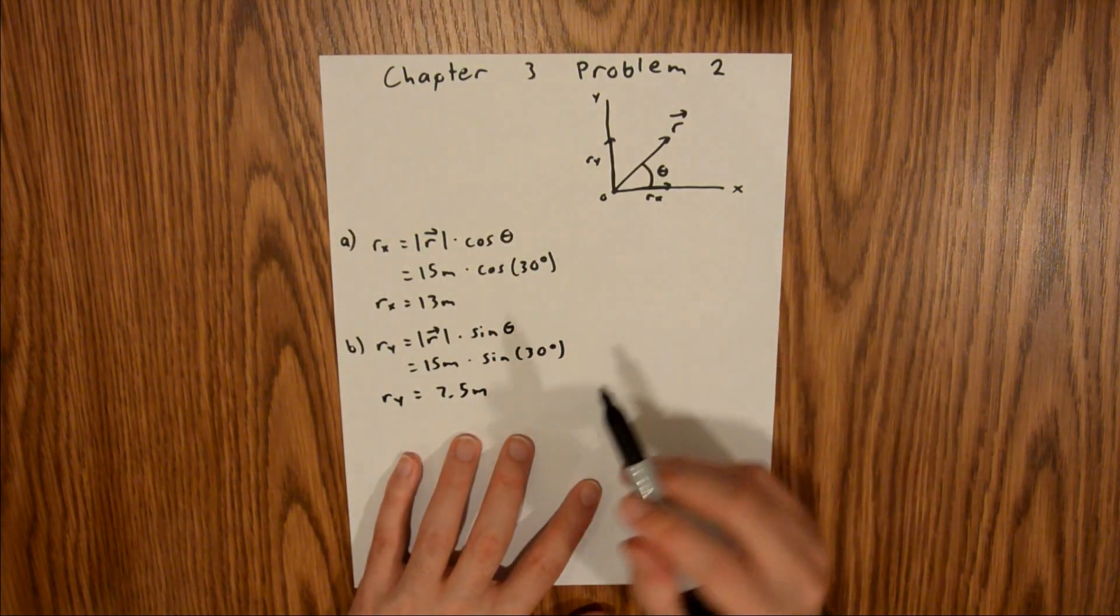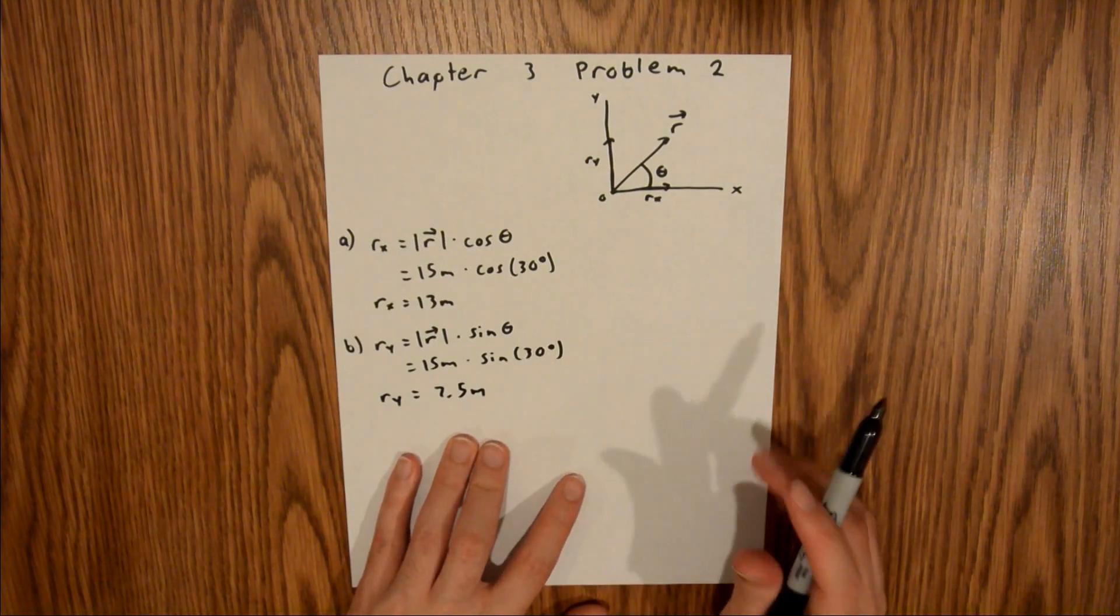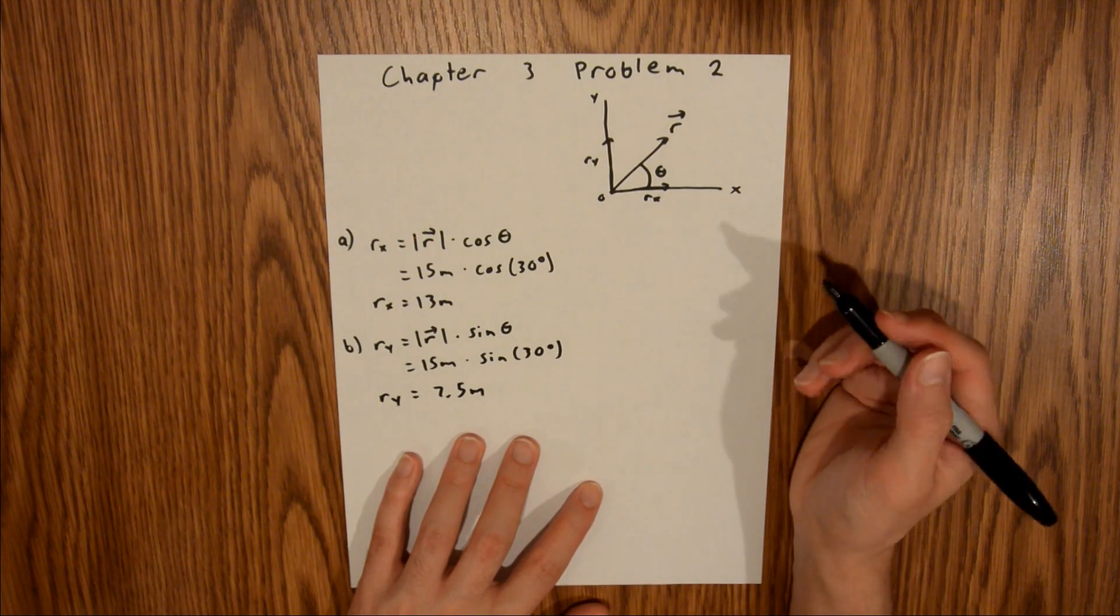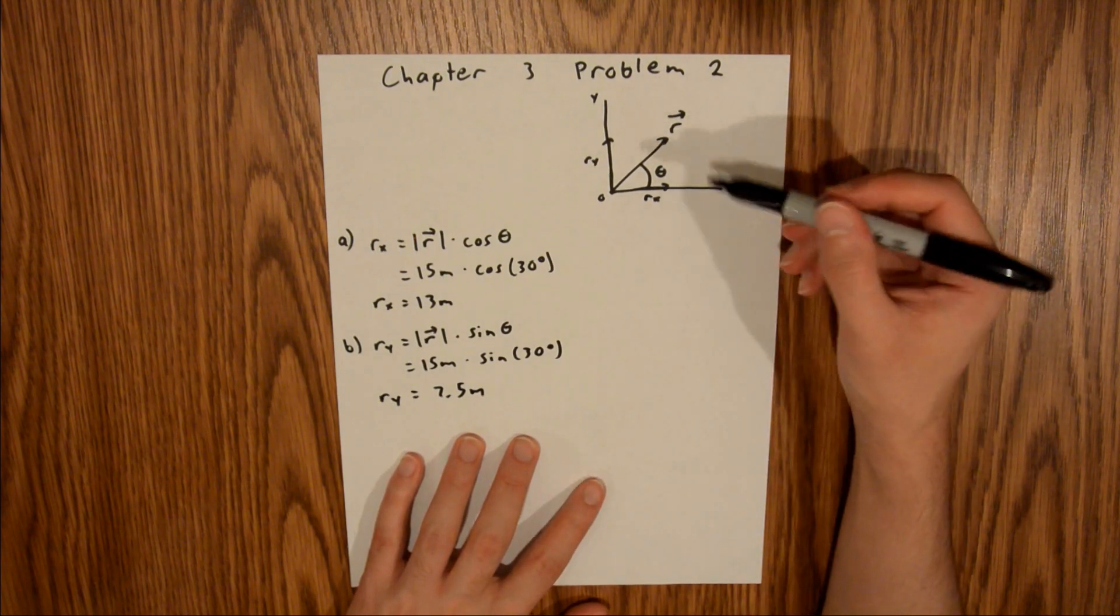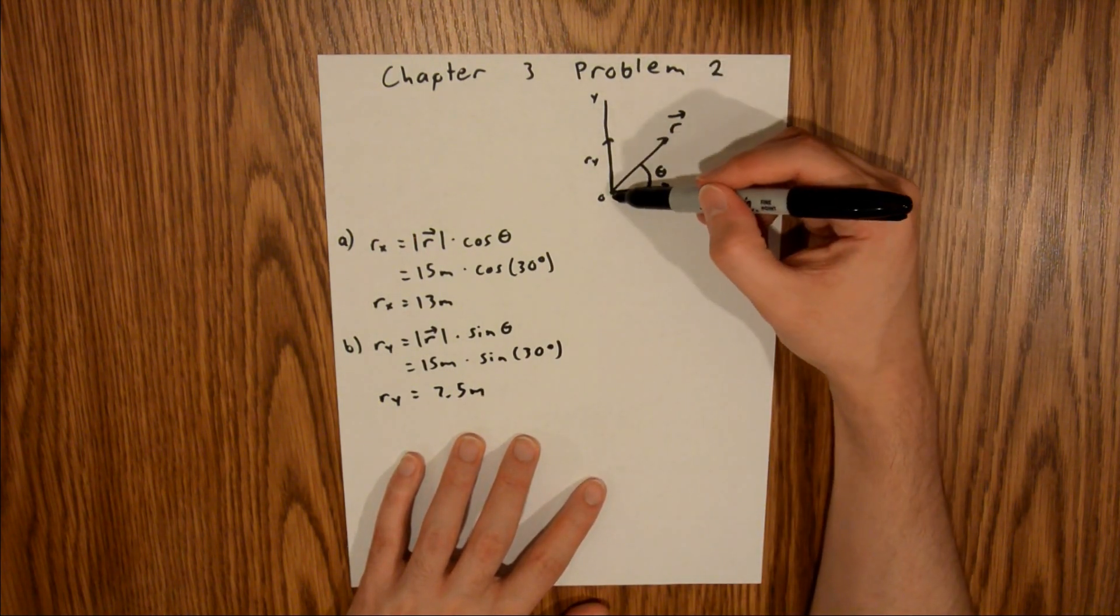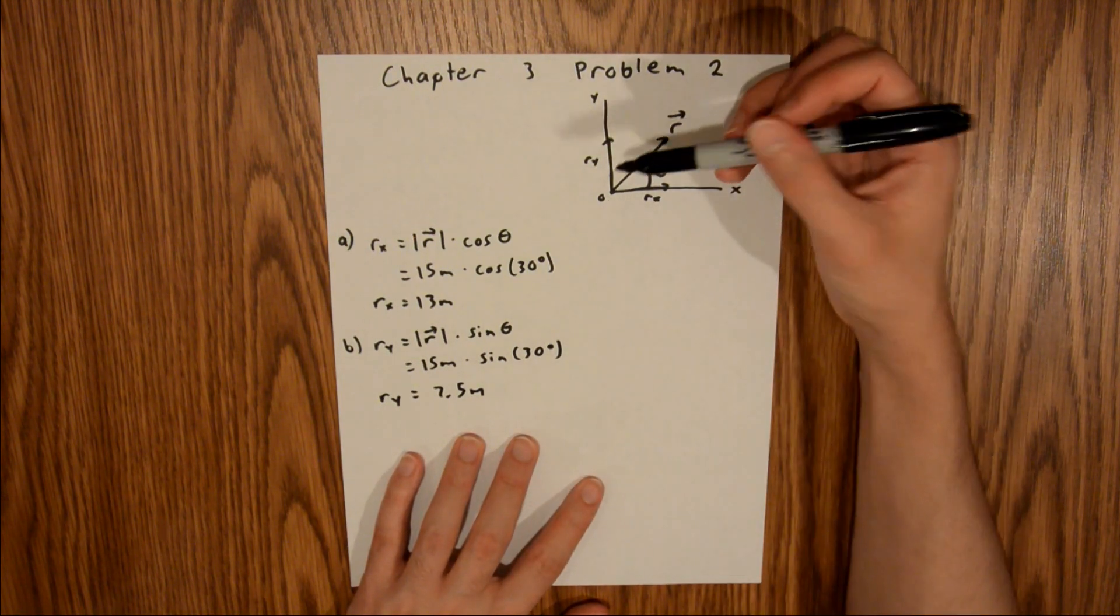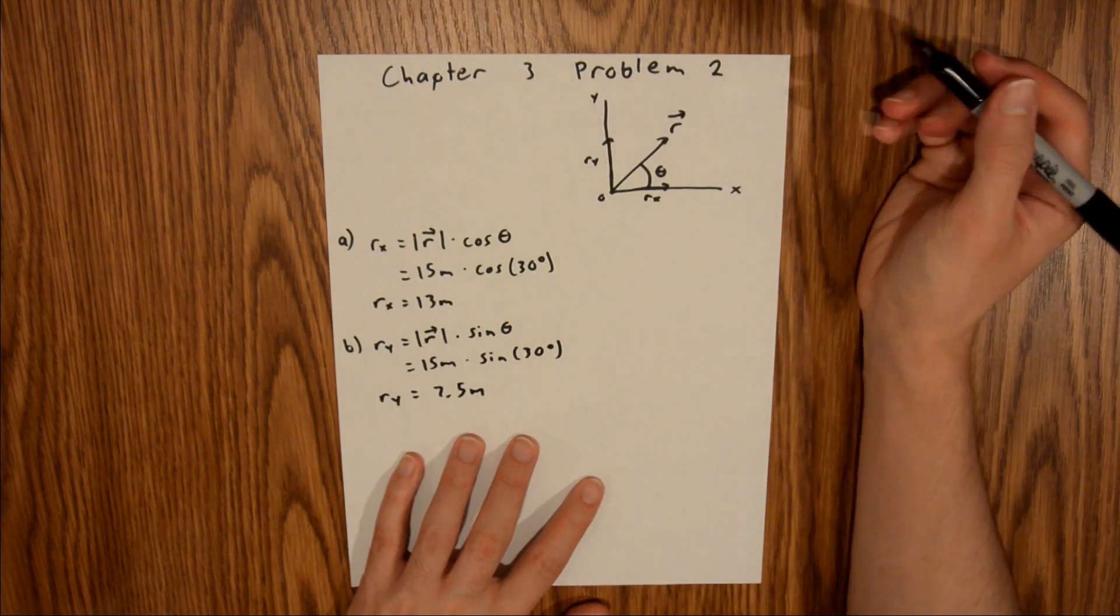Just be careful when you plug these into your calculator that it is in degree mode and not radian mode. And just as a little sanity check, both of these components are positive, which makes sense because we are only in the first quadrant. So looking at both axes, your x component points in the positive x direction and your y component points in the positive y direction.